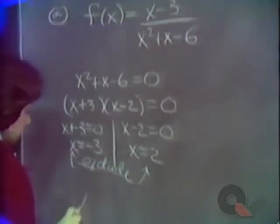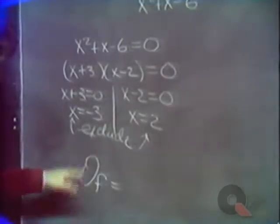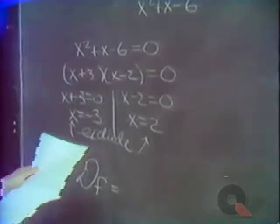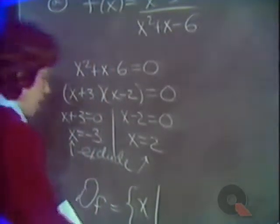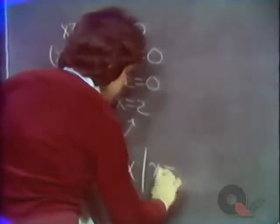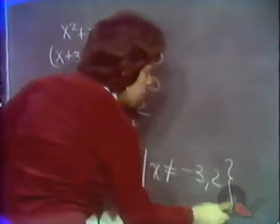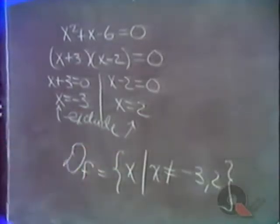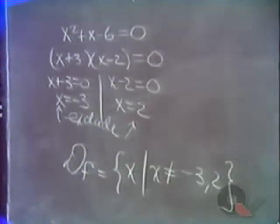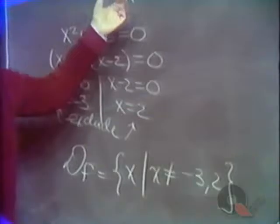The domain of this function f — written as domain of f — would be the set of all x values except x should not be equal to minus 3 or 2. All x values with x not equal to minus 3 or 2 are to be included; those are the only ones to be excluded. All other x values can be substituted in and have this thing make sense, with no division by zero and no square roots of negative numbers. Obviously, there are no square roots to worry about here.